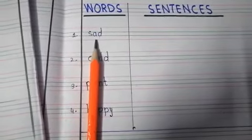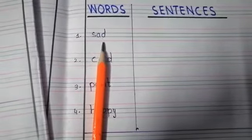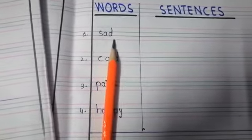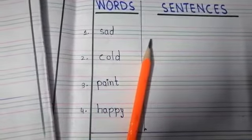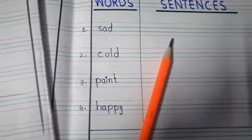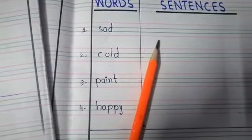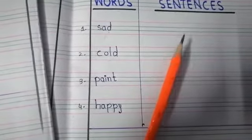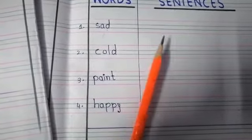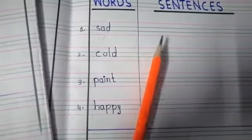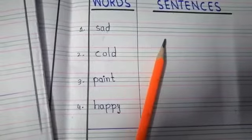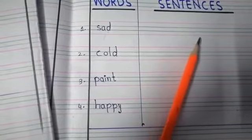So number one word is sad. Said means khafa hoona, udaas hoona. So the first example is I am sad. Number two, my friend looks sad. Number three, my sister is looking sad today.